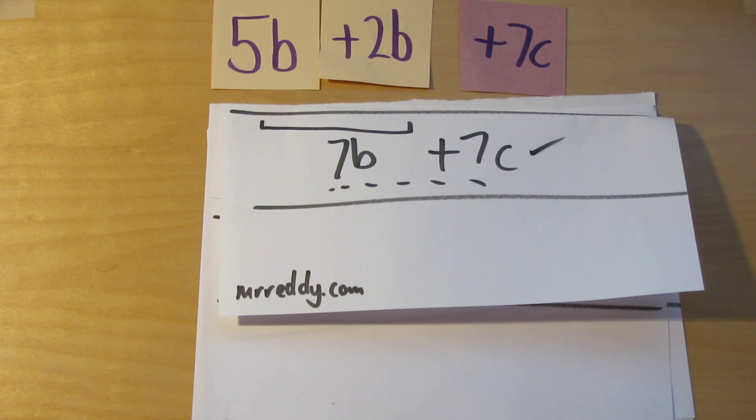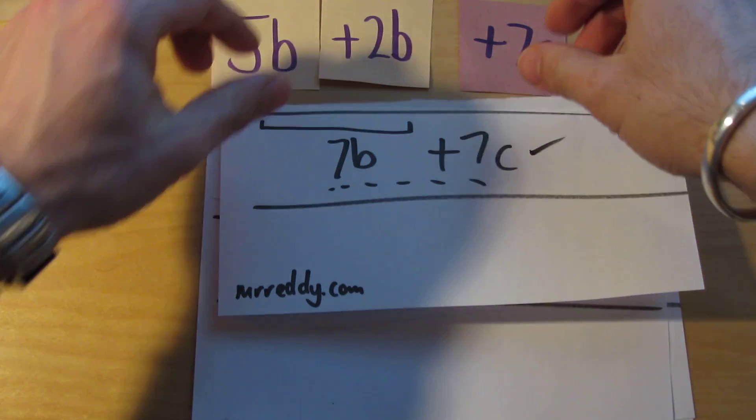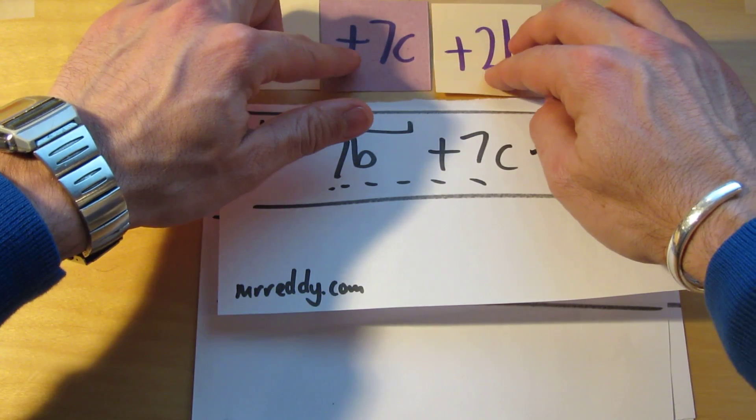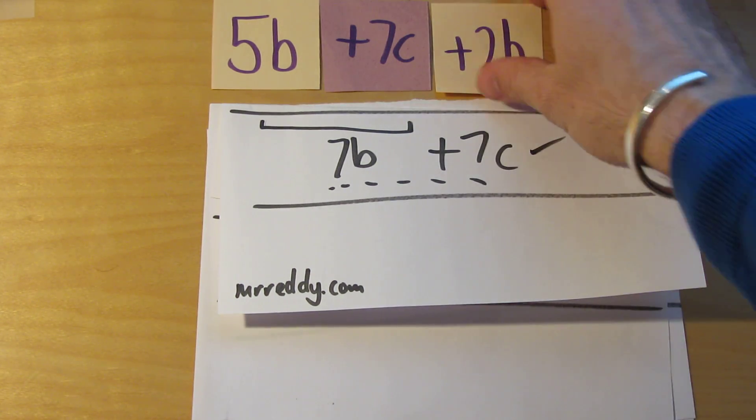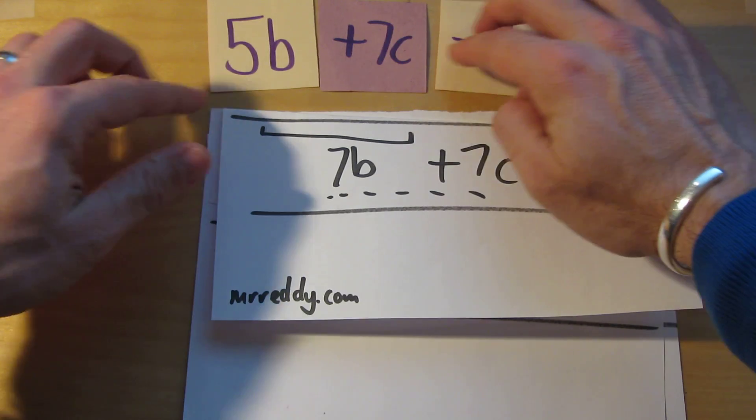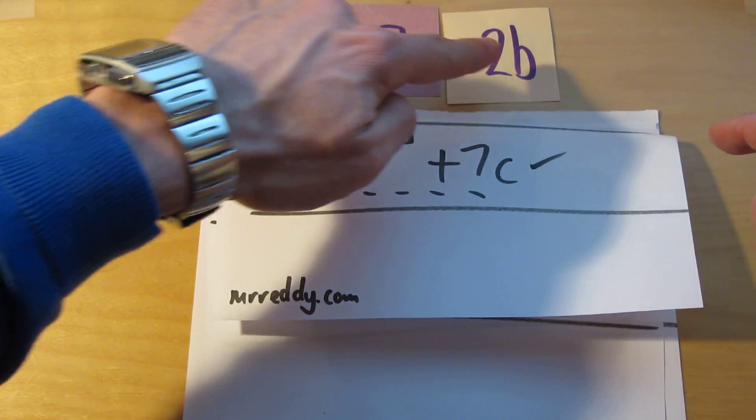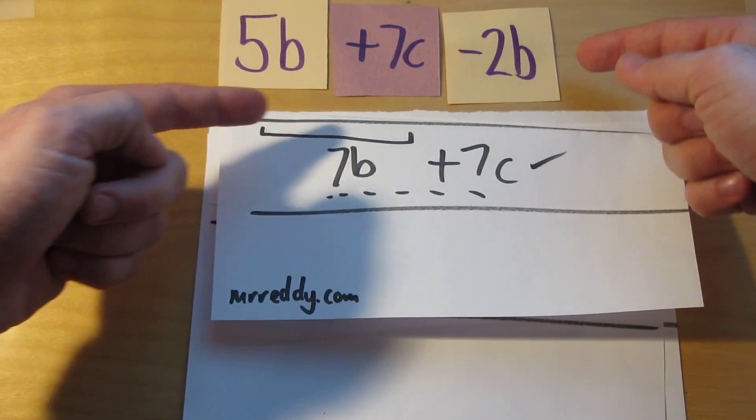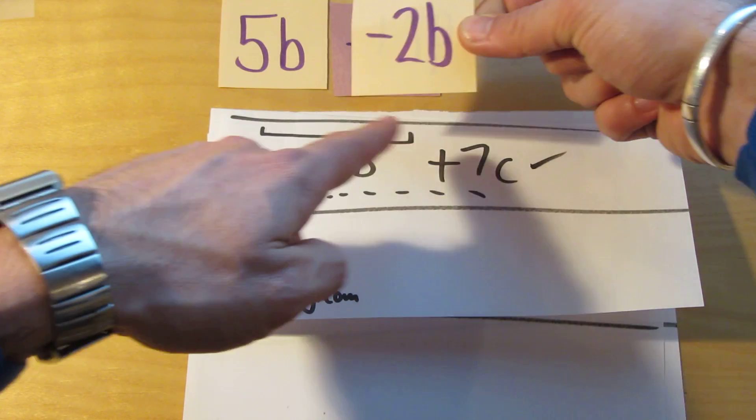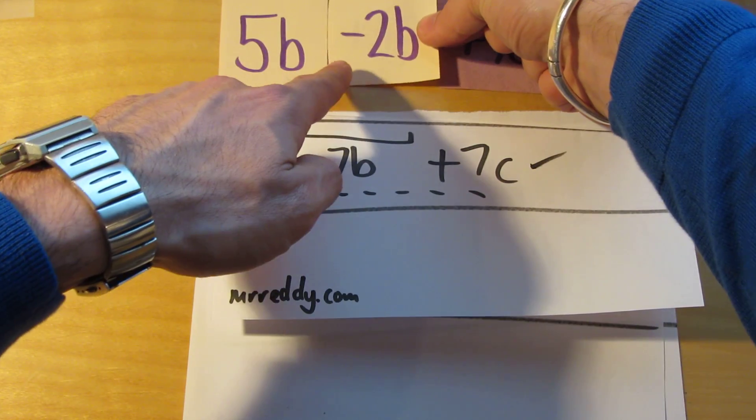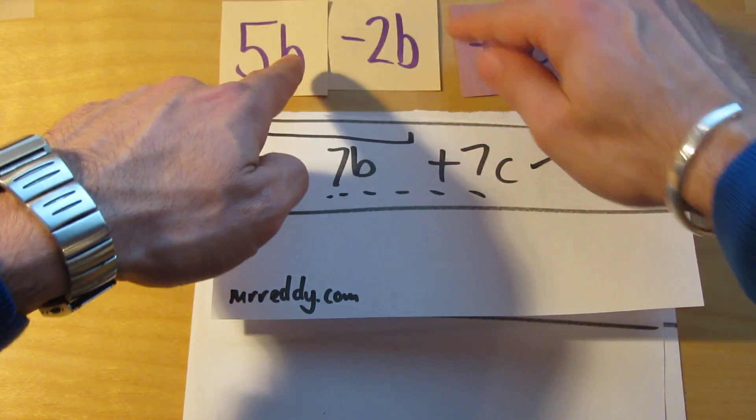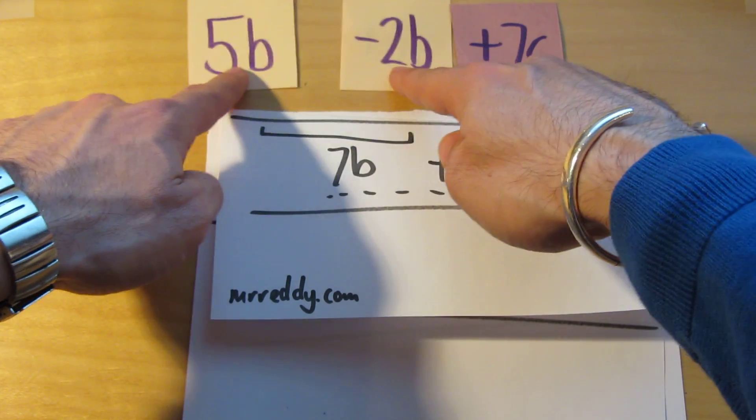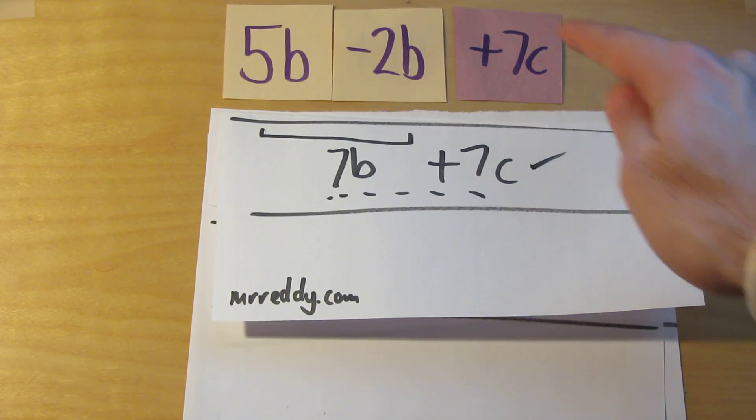Okay next one. Again I'm not going to change very much. All I'm going to do is swap the order of the terms around. And I think I'll flip this over and make that take away 2b. So we've got 5b plus 7c take away 2b. The important thing when you're simplifying expressions like this is that you get the terms with the same variable together. It makes it a lot easier. And that's called collecting the like terms.